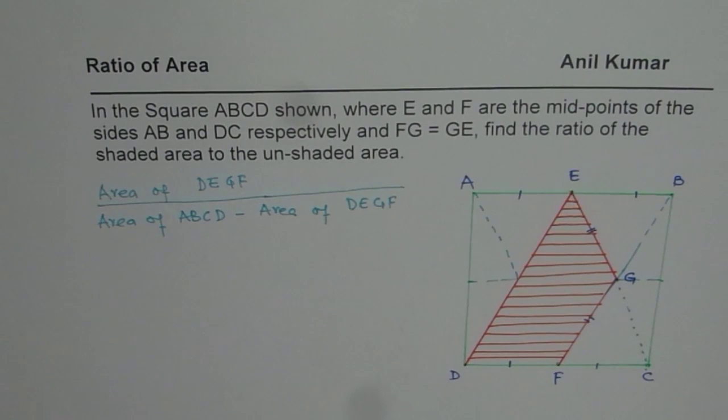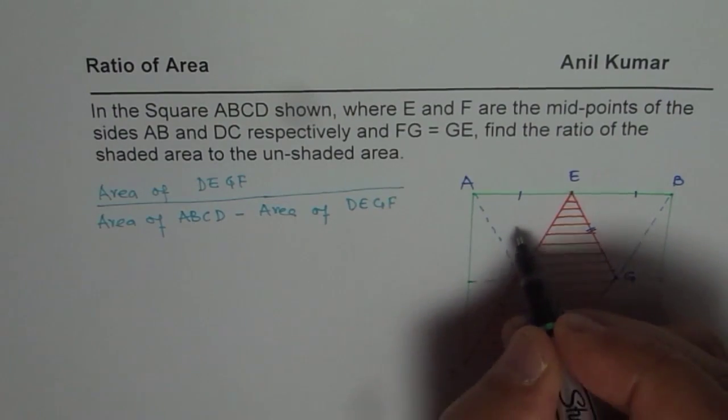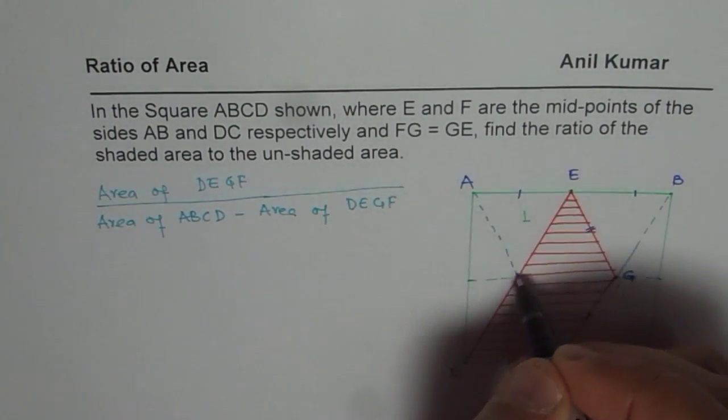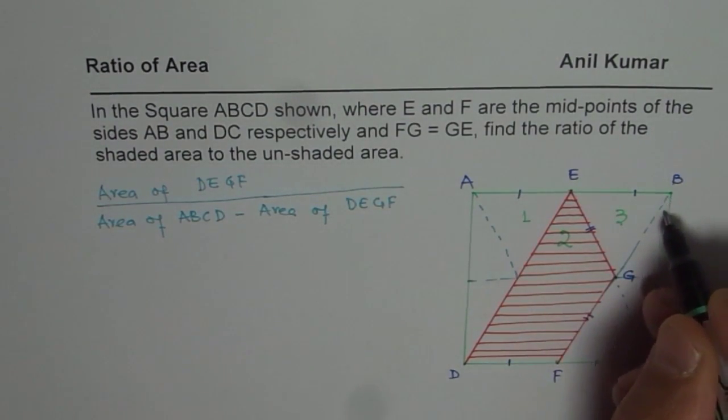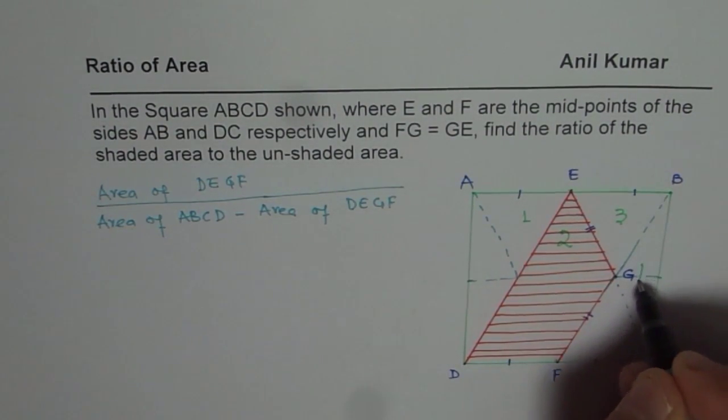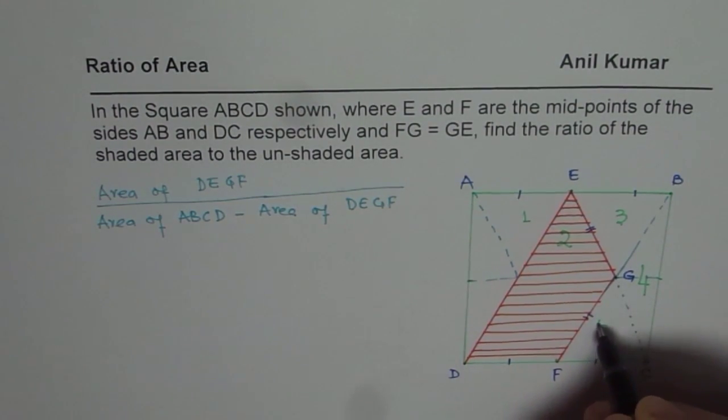Now, once you do that, what do you observe? You really observe that there are a couple of triangles. We can name these triangles. We can say this is my triangle number 1. Then this is triangle number 2, this is triangle number 3. And if I count the whole thing here, it becomes triangle number 4.